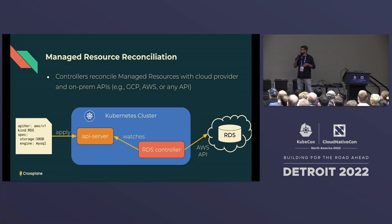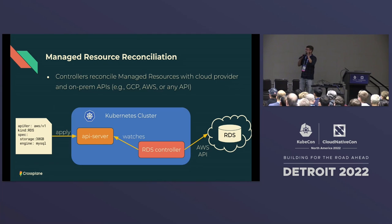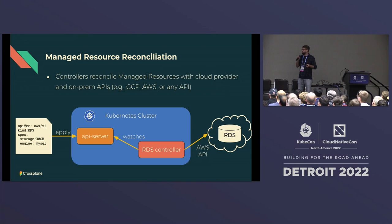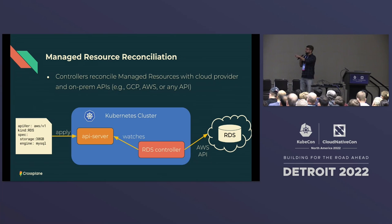On the left of the screen you've got an API object representing an Amazon RDS database, with the spec specifying desired configuration. You apply that to the Kubernetes API server — with kubectl apply or a GitOps methodology like Flux or Argo. A specific controller for Amazon RDS watches the API server, gets an event, sees that someone is requesting creation of an RDS database, and uses the AWS API to make that desired state actual in the real world.